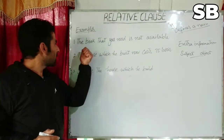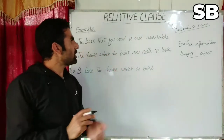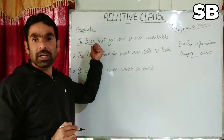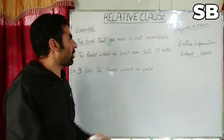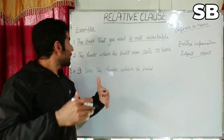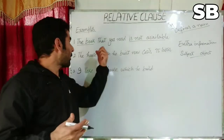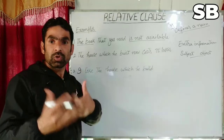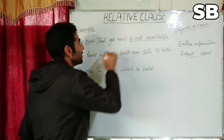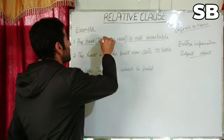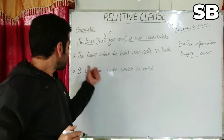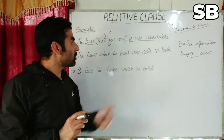Now look at these examples. First: 'The book that you need is not available.' Here we are talking about the book, and what is being said is that it is not available. But there is extra information about the book — 'that you need' — that is the extra information in this sentence, so we can call it a relative clause.